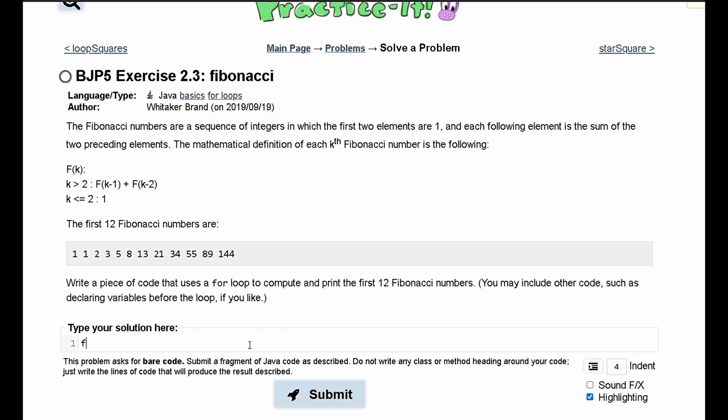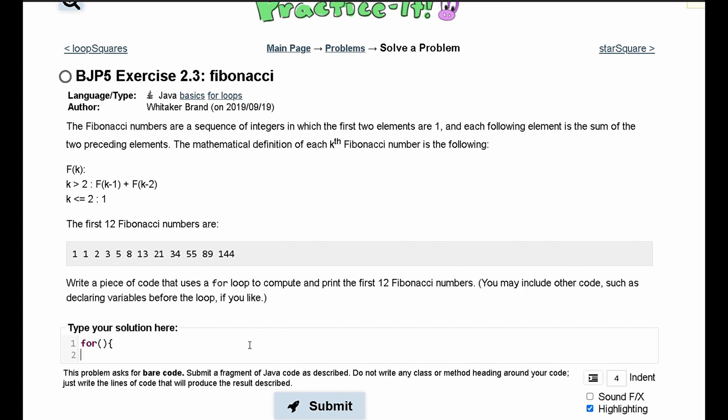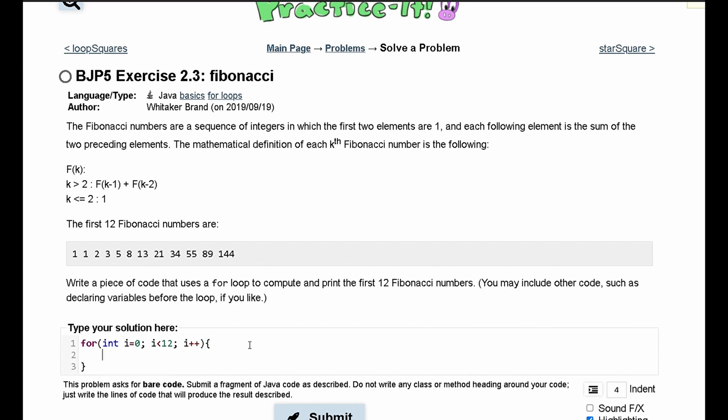First we are going to need our for loop. Inside of here, since we're given 12 numbers, we're going to run it for i equals zero and i has to be less than 12, and then we are going to have i plus plus so it goes through all the values. Inside of here we are going to have our system.out.println where we are going to print whatever we get.